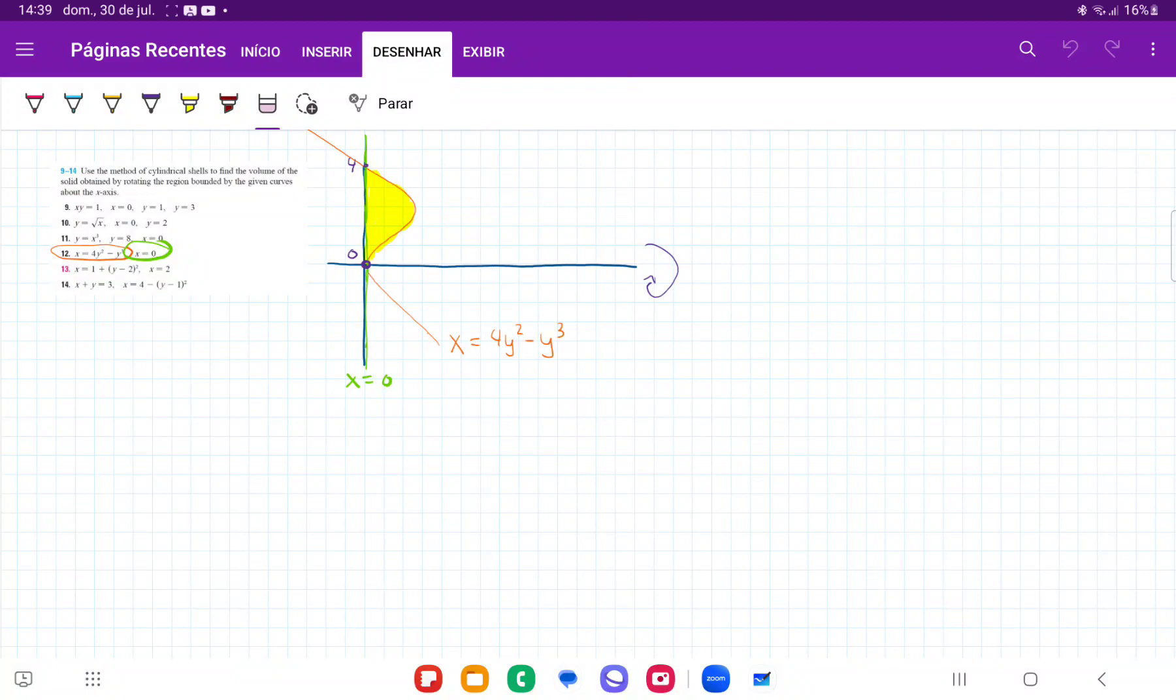So in the interest of time, I've gone and I've put these two equations in a graphing calculator, and we can see here that they intersect at the point y is equal to 0 and y is equal to 4.